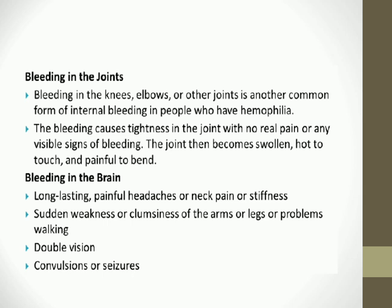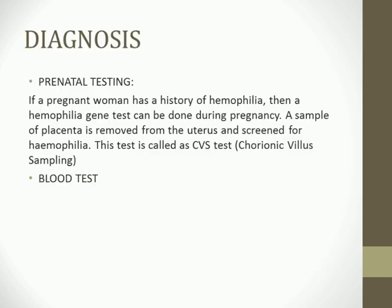Hemophilia can be diagnosed during pregnancy if there is a family history. A small sample of placenta is removed from the uterus and screened for the hemophilia gene — this test is called chorionic villus sampling (CVS). There are also other blood tests used for screening.